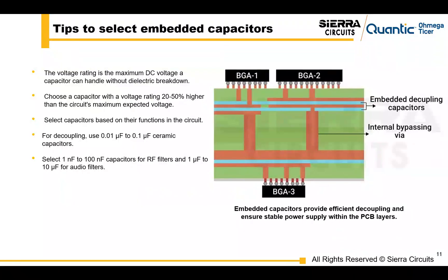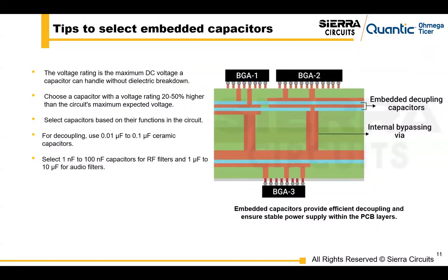Some tips for selecting embedded capacitors: always select a capacitor with a voltage rating 20 to 50 percent higher than the maximum expected voltage in your circuit. You can use ceramic capacitors in the range of 0.01 to 0.1 microfarads, and for RF filters, select capacitors between 1 and 100 nanofarads.